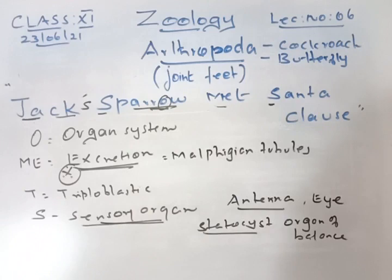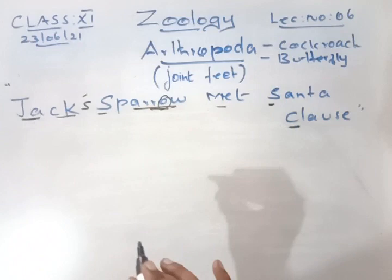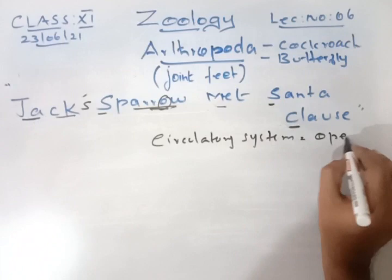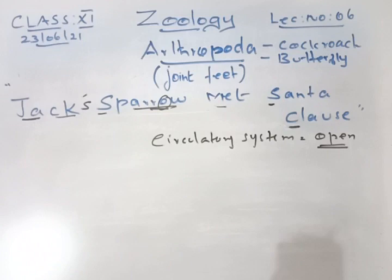C stands for circulatory system. Here the circulatory system is open — there is no blood vessel to carry the fluid, and that is why they don't have haemoglobin pigment. It is an open circulatory system.